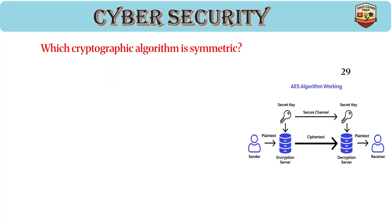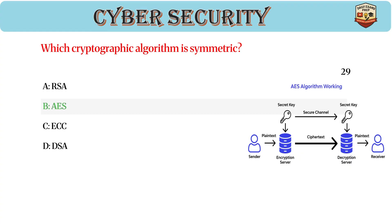Which cryptographic algorithm is symmetric? Answer: B, AES. AES is a symmetric key algorithm used for fast bulk data encryption. It supports key sizes of 128, 192, and 256 bits.